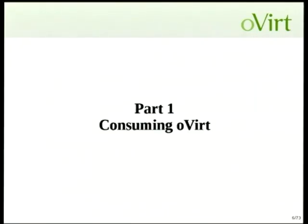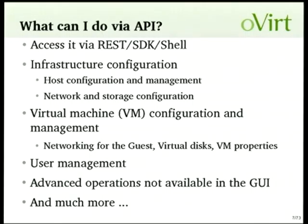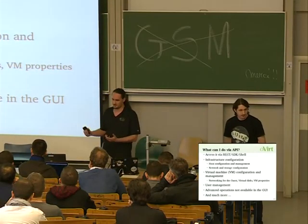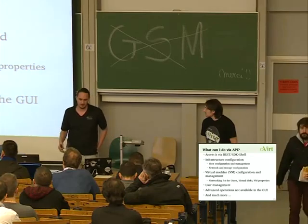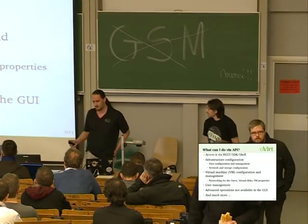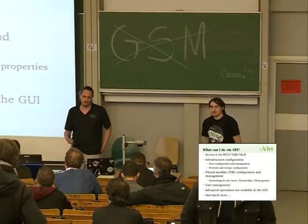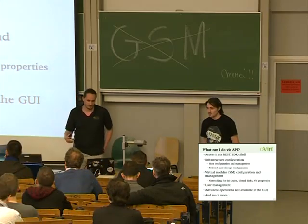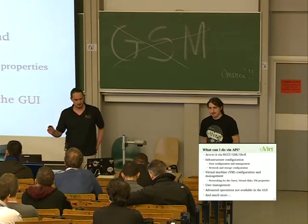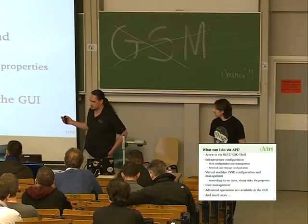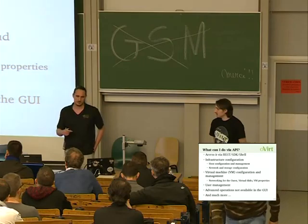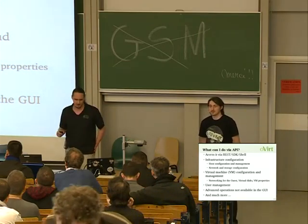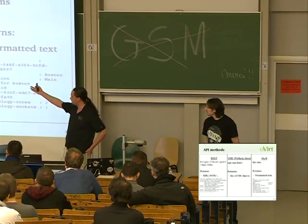First part: how to consume all this. We have APIs — REST API, SDK, and Shell. What can I do with these APIs? I can configure my infrastructure: host configuration, installation, networking on the host, storage resources. I can do virtual machine configuration — networking on the VM, storage, different devices, memory, etc. Also VM lifecycle management and user management. We have a very powerful permission system. Basically all the operations in the UI and more, because some features are only exposed via the API.